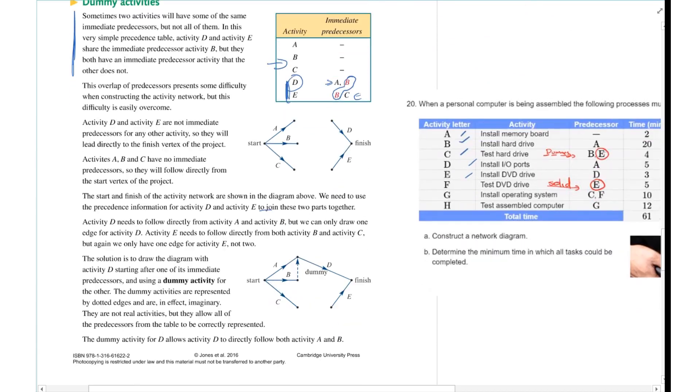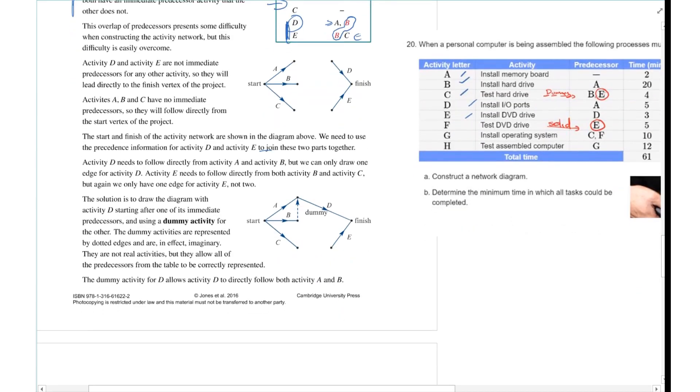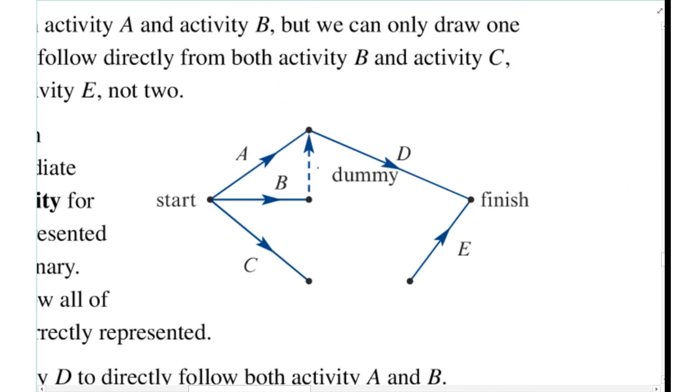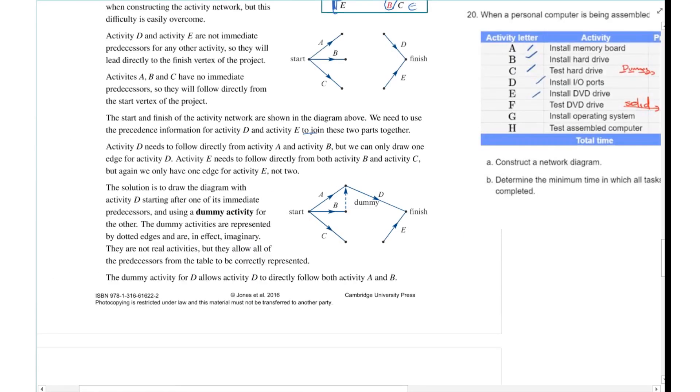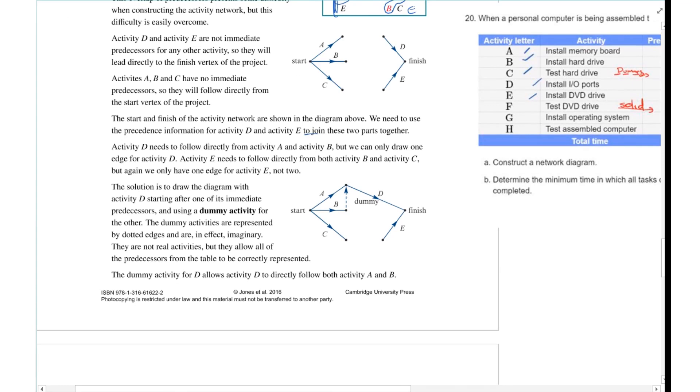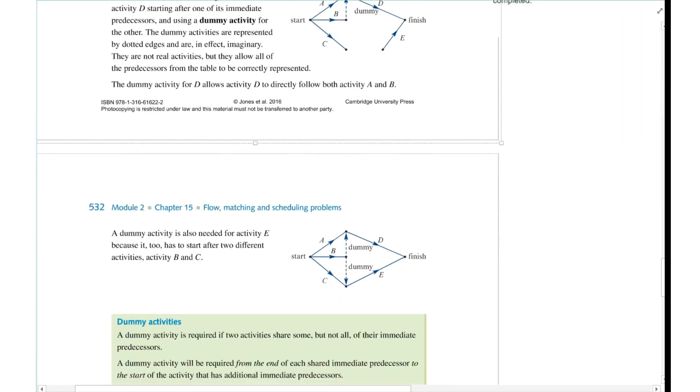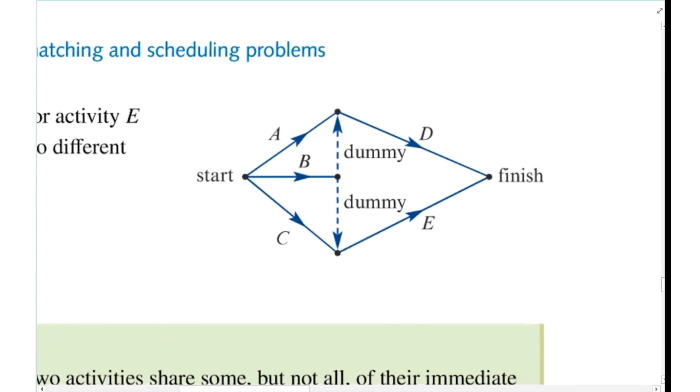So what you end up doing is you put what we call a dummy activity and they're showing it like this here, it's usually a dot dot dot. Usually you're going to have, I'm going to zoom in for a sec, it'd be written like D1 comma and that's a one because we're going to have two of them, and say zero. The zero comes later on because it doesn't add any time, it's just a connector basically.